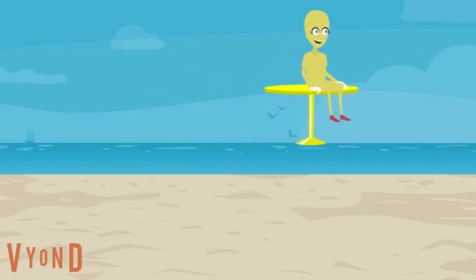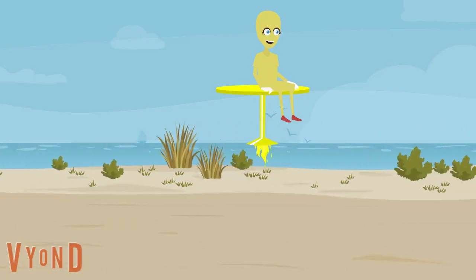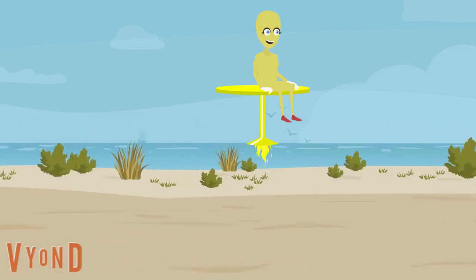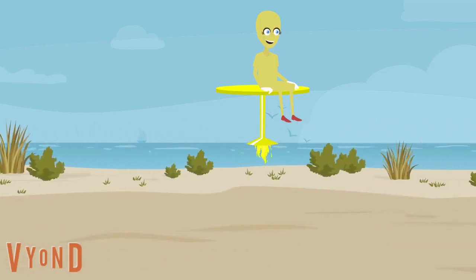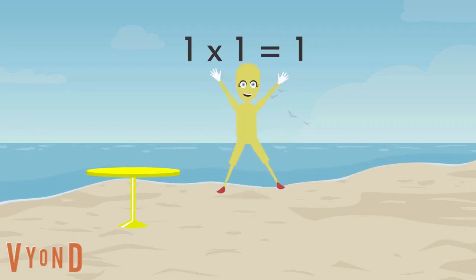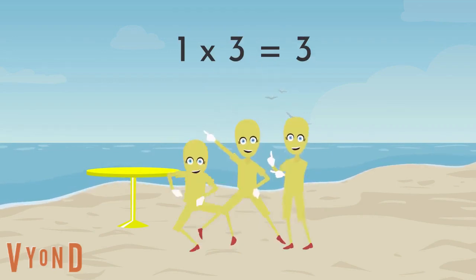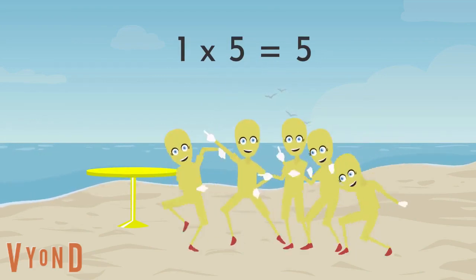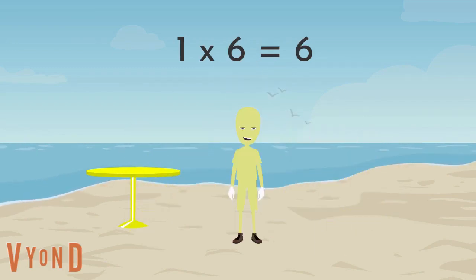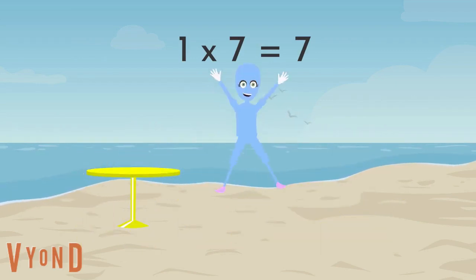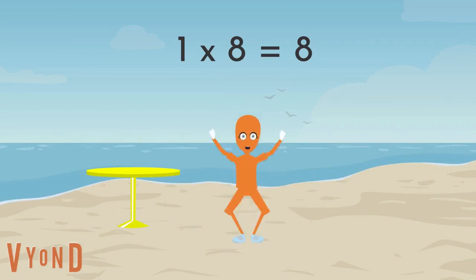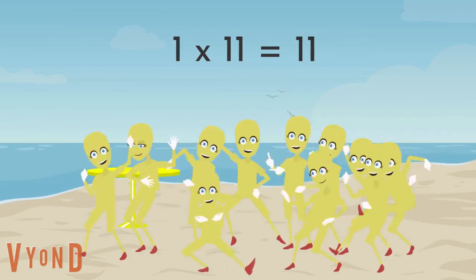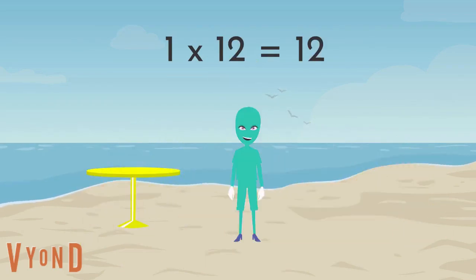Let's go! Any number multiplied by one, you get that number and you're done. Any number multiplied by one, you get that number and you're done. One times one is one. One times two is two. One times three is three. One times four is four. One times five is five. One times six is six. One times seven is seven. One times eight is eight. One times nine is nine. One times ten is ten. One times eleven is eleven. One times twelve is twelve.